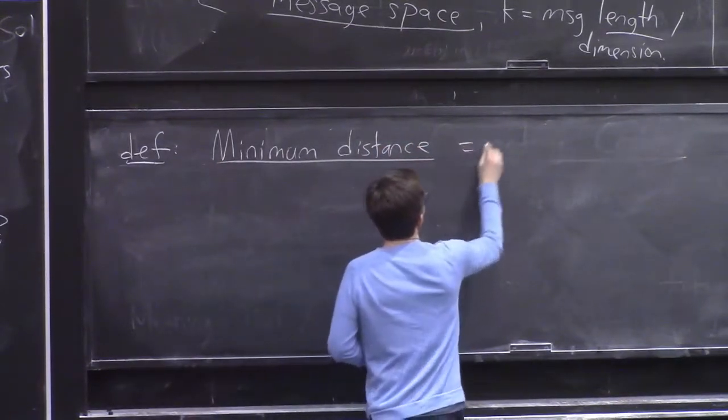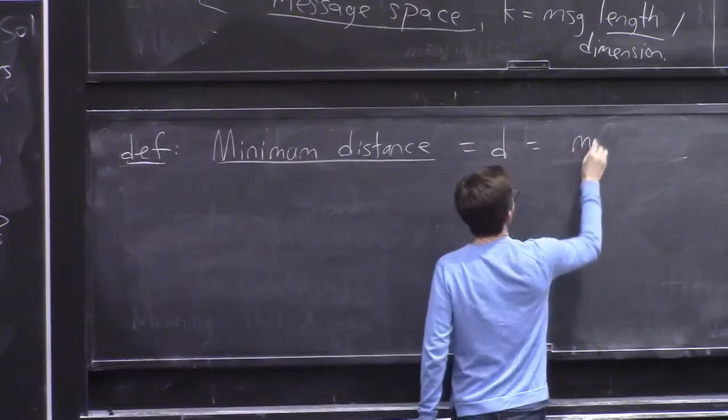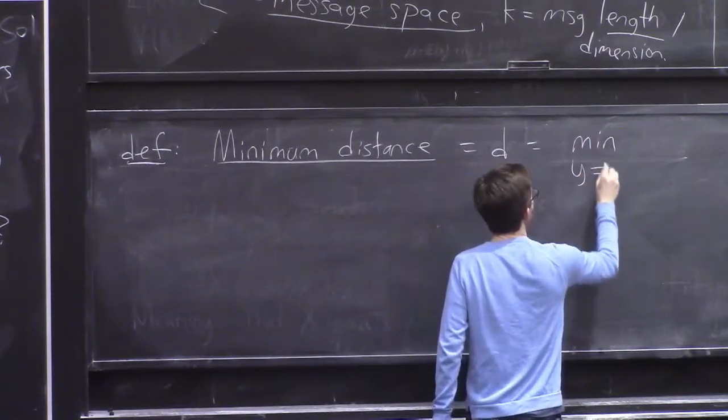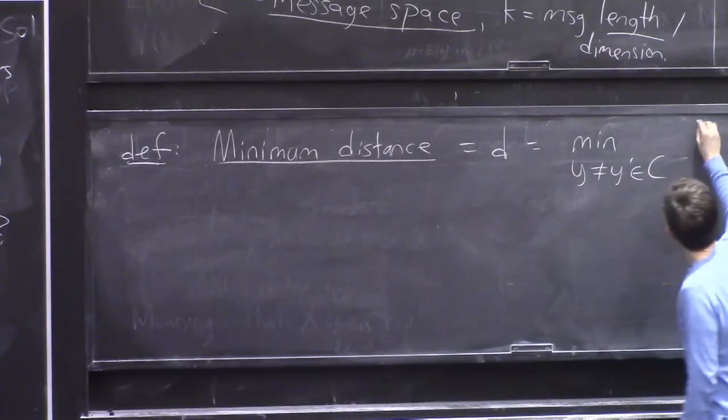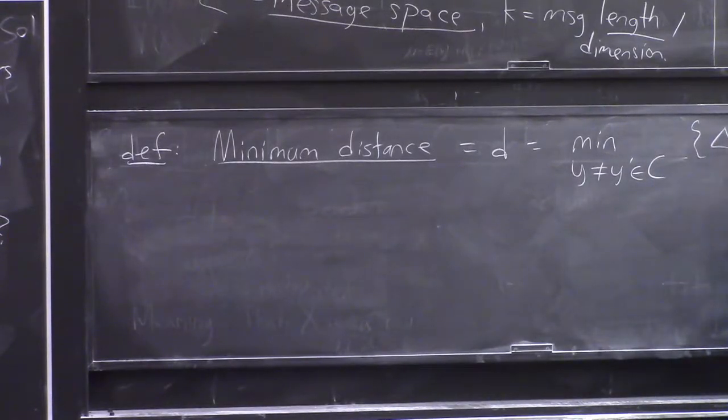The minimum distance of a code, which is denoted D, is just the minimum over all distinct Y and Y prime in the code, in the range of the decoding function, of the hamming distance between Y and Y prime.